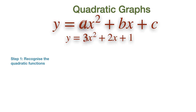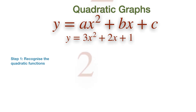Here A corresponds to 3, B corresponds to plus 2, and C corresponds to plus 1. The highest power of all quadratic functions is 2, so this is another way to distinguish that the function is quadratic.